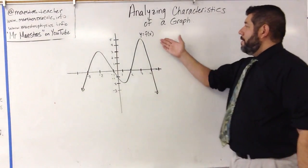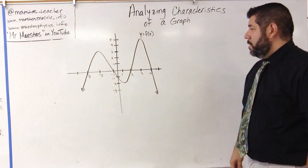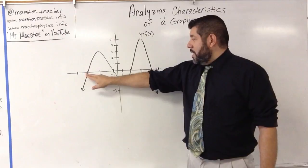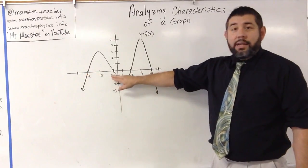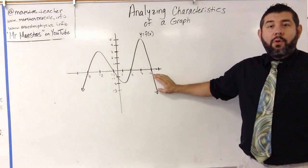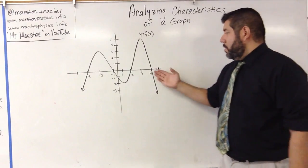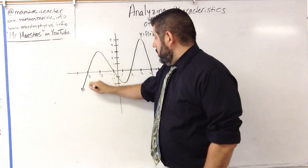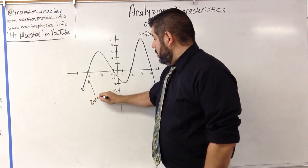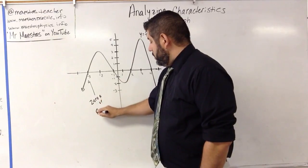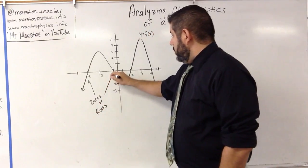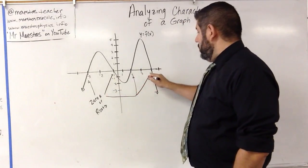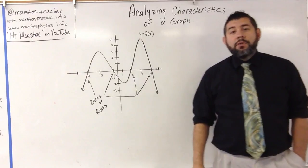So, a couple of things here. We've got this graph y equals f of x. We know that this graph crosses the x-axis at negative 3, negative 1, 2, and 4. These are called its x-intercepts. We also sometimes call these the zeros or roots. So those are the zeros of the function.